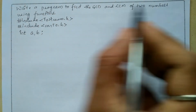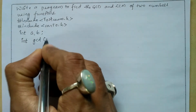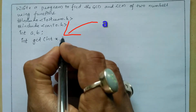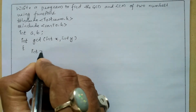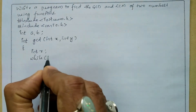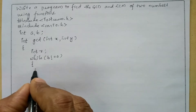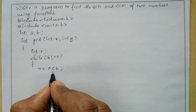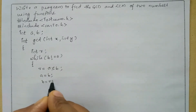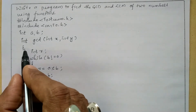Now I'm going to write the function definition for GCD of two numbers using functions. The return type is integer, the name of the function is GCD, and I'm going to pass two arguments of type integer: int x, int y. Inside, I declare a local variable int r. I use a while loop: while b is not equal to zero, r equals a modulo b, then a equals b, and b equals r. After the loop, it returns the value of a.